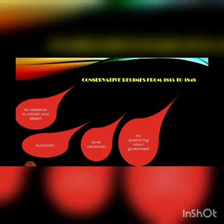So that means no questioning about government — the fourth point that shows the autocratic, conservative, and sometimes tyrannical rule that controlled the maximum part of Europe from 1815 to 1848, which we call the era of conservatism.